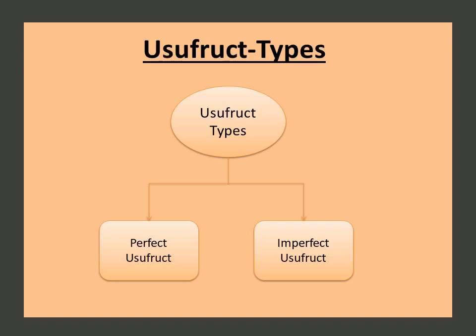Let us now talk about how usufructs end. A usufruct terminates when the last surviving usufructuary dies, and the property goes to the legal heirs as written in the will or usufruct contract. Usufructs can also be terminated in certain circumstances by judgment of a court. The creator of the usufruct can set a term for the usufruct, or establish a condition which, upon coming into effect, results in termination of the usufruct.